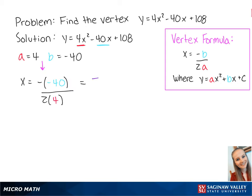which is equal to 5. Now we plug 5 into the original equation to give us y equals 4 times 5 squared minus 40 times 5 plus 108, which is equal to 8. Now we know that the vertex is 5, 8. This is the final answer.